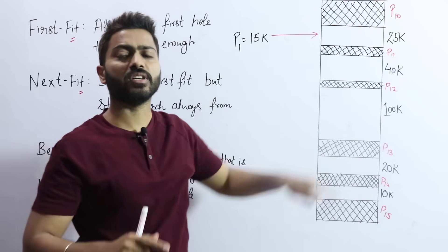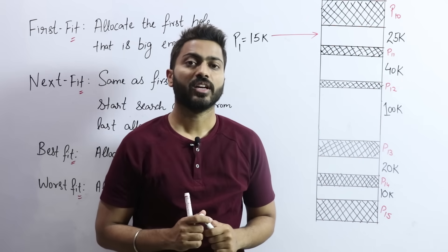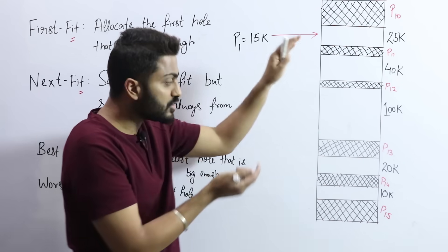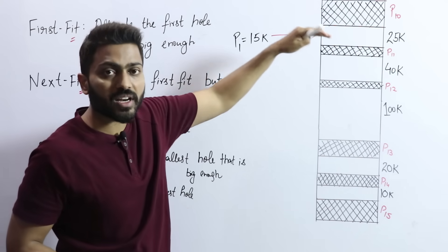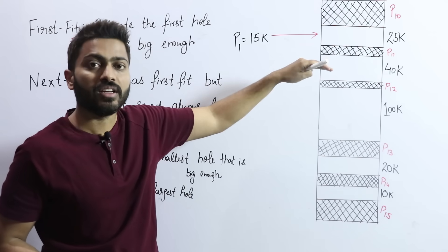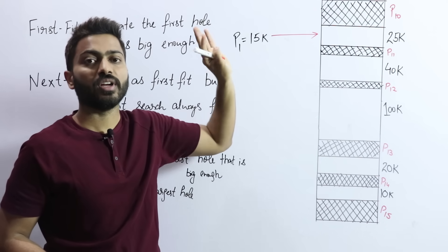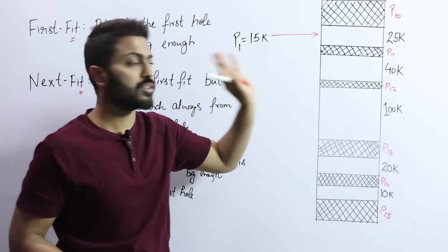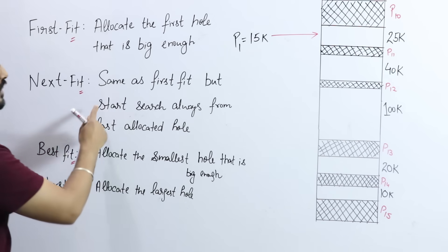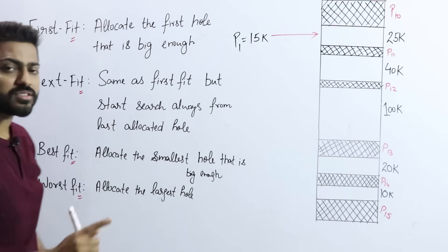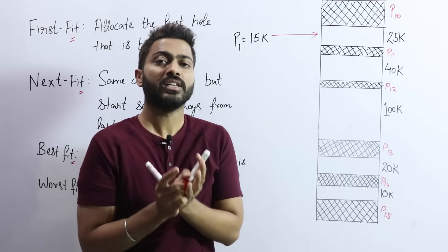The advantage of First Fit is that searching time is very low. We are not searching the entire list. As soon as the first hole is found that can accommodate the process, we place the process there. This makes First Fit the easiest algorithm.